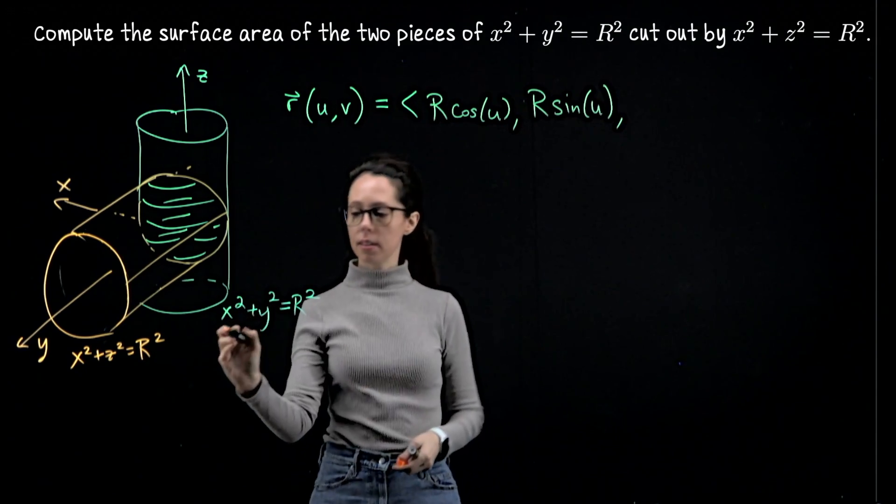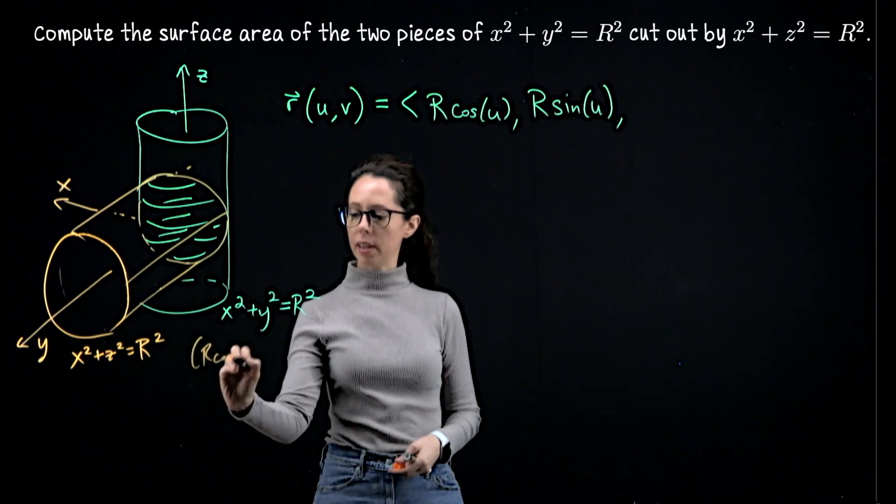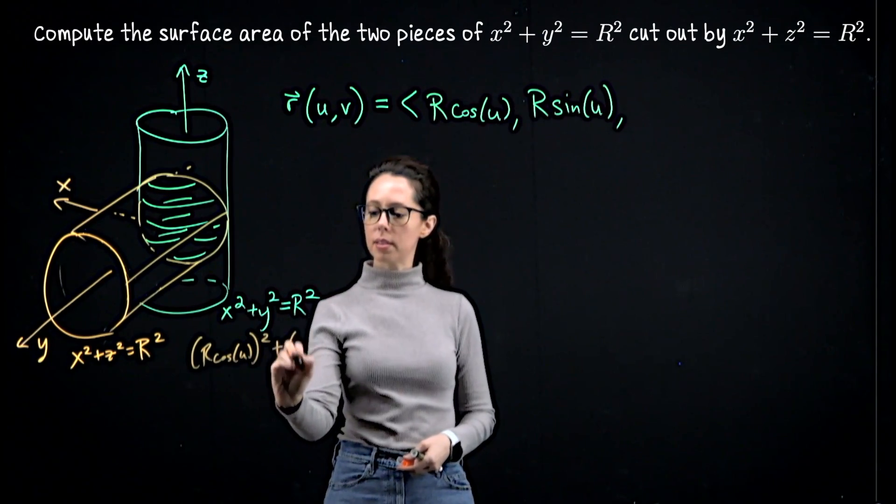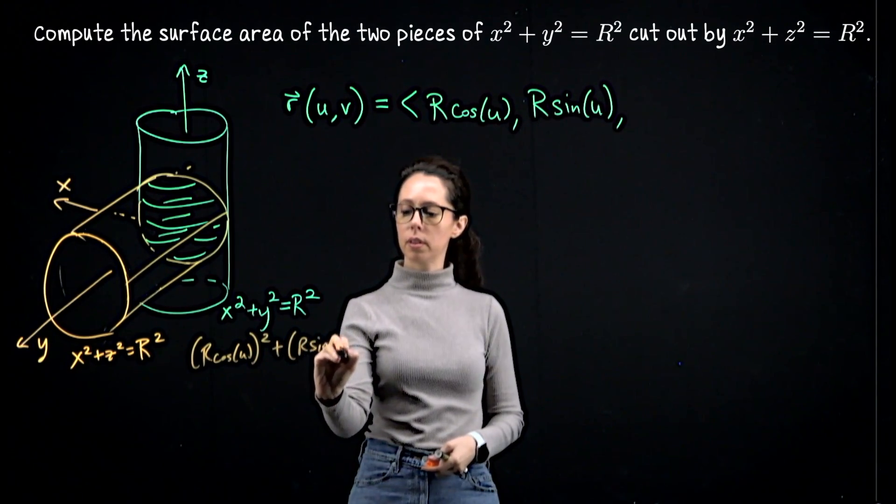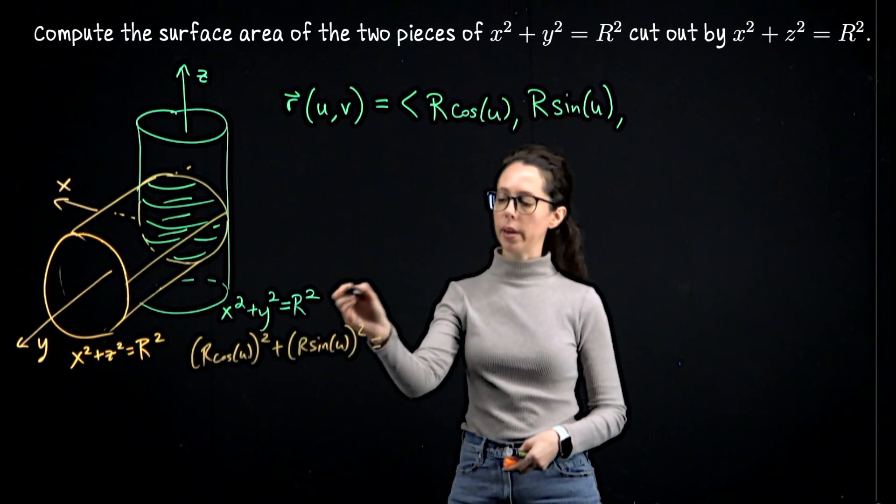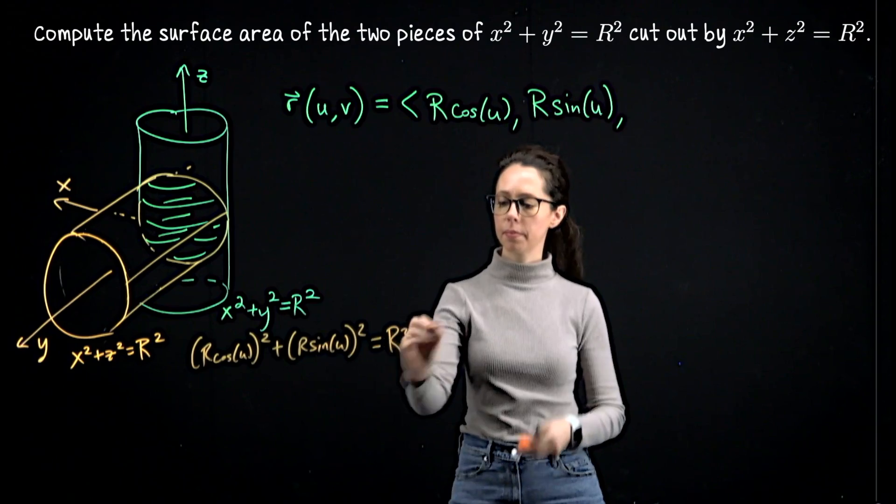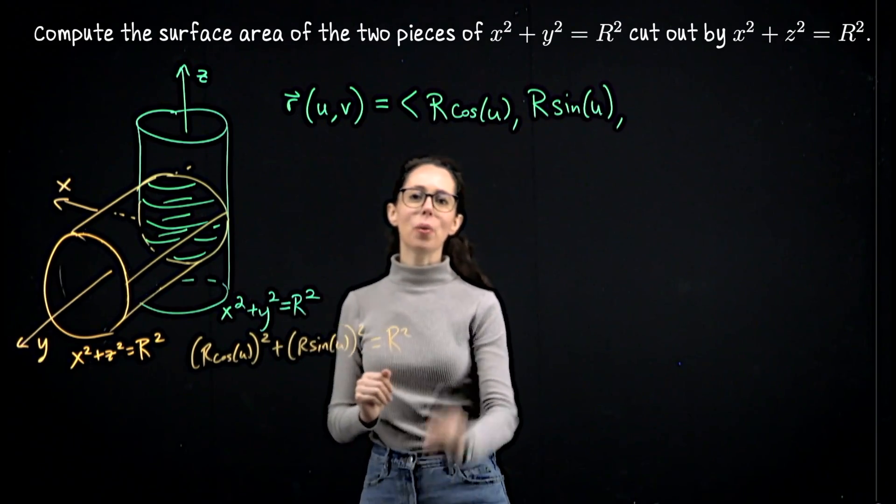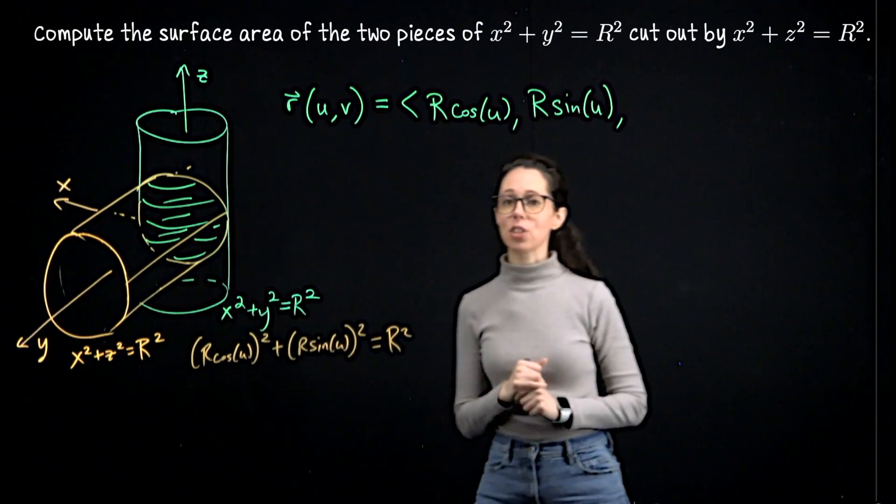So the idea here is R cosine u squared plus R sine of u squared equals R squared cosine squared plus R squared sine squared, which is R squared. So whenever you see that, you want to proceed to this kind of parametrization.